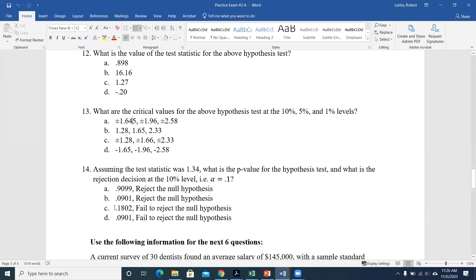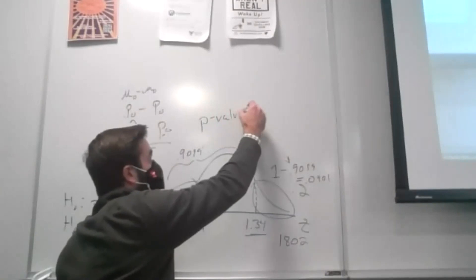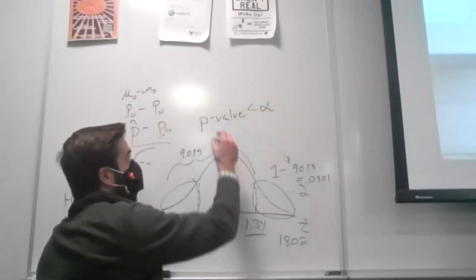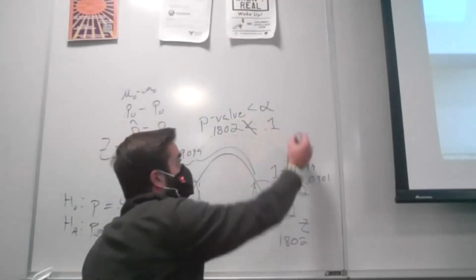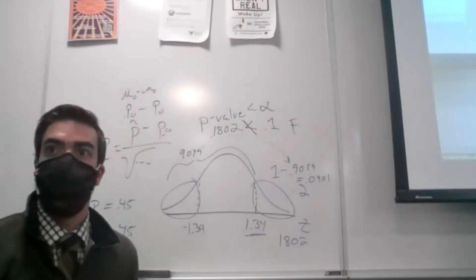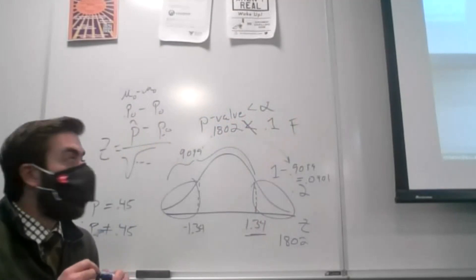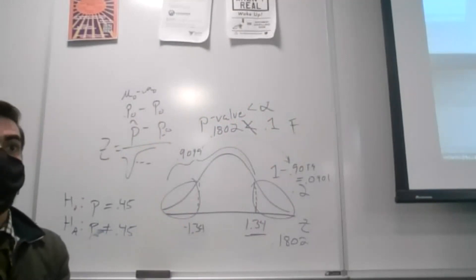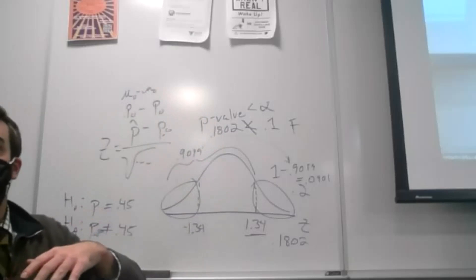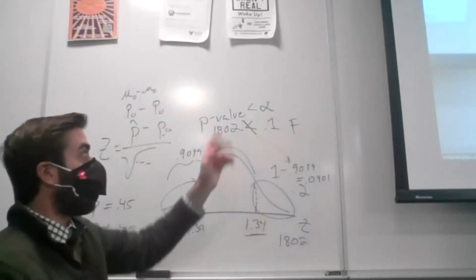We only reject if the p-value is less than alpha. Our p-value is 0.1802 and alpha is 0.1 — 0.1802 is not less than 0.1, so we fail to reject the null. You can also test against multiple alphas at once: is 0.1802 less than 0.1? No. Less than 0.05? No. Less than 0.01? No — fail to reject in all cases.